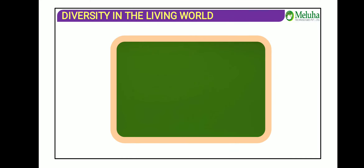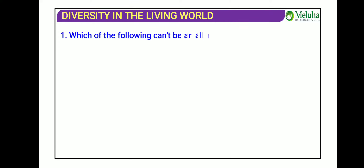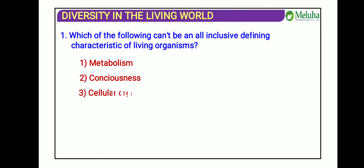Here we will discuss a few objective questions on the living world topic. The first question is: which of the following cannot be an inclusive defining characteristic of a living organism? The options are metabolism, consciousness, cellular organization, and reproduction.